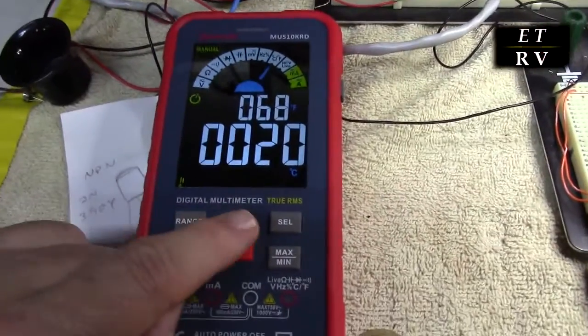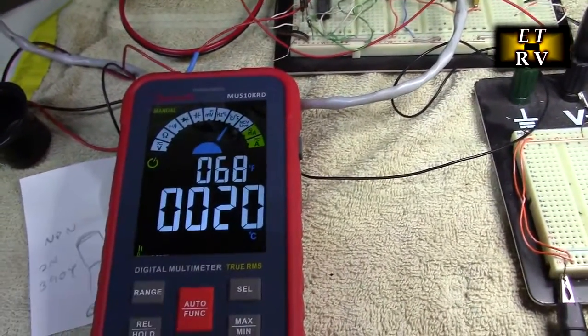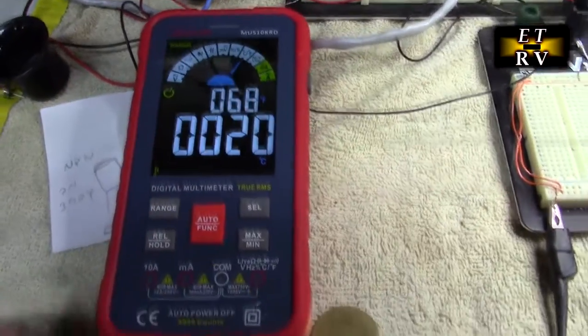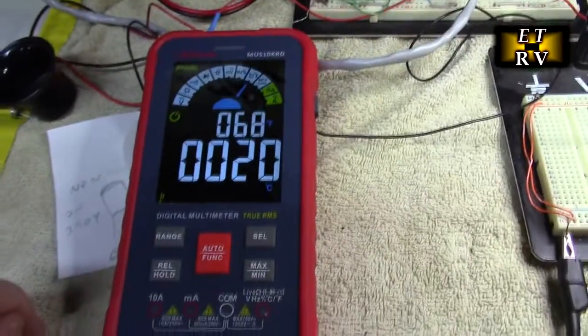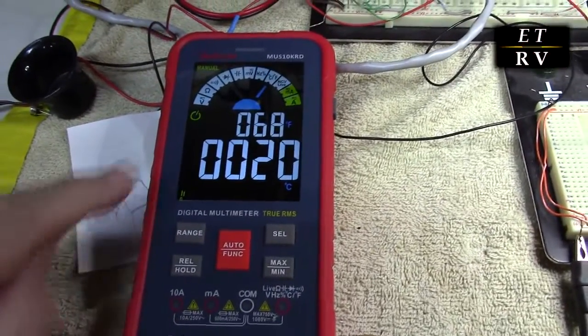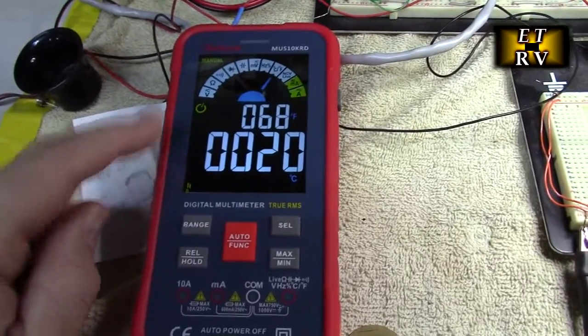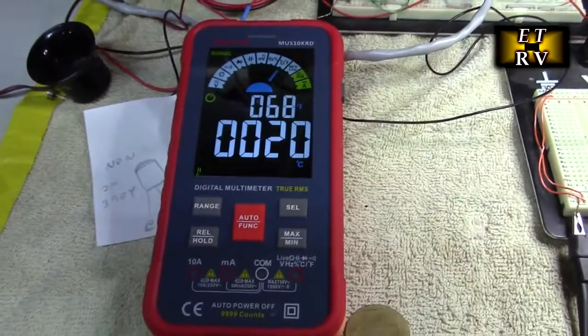The nice thing I'm going to show is I've moved the auto function along to centigrade/Fahrenheit. You can see right there. And I don't have any leads in there. And right now it's telling me the room temperature. There's a sensor inside here, and it has both Fahrenheit and centigrade, which is really nice.